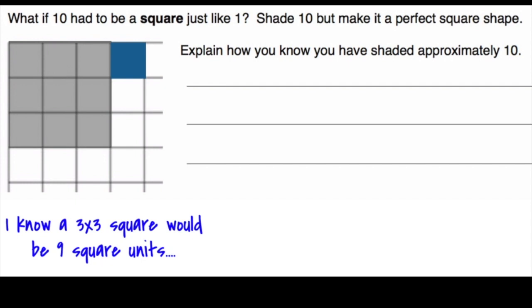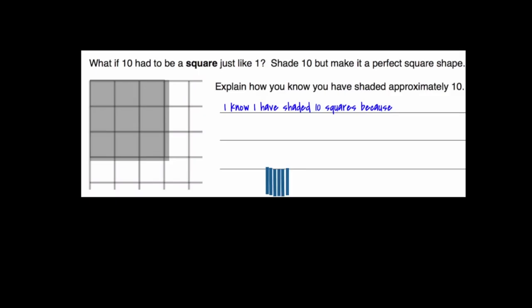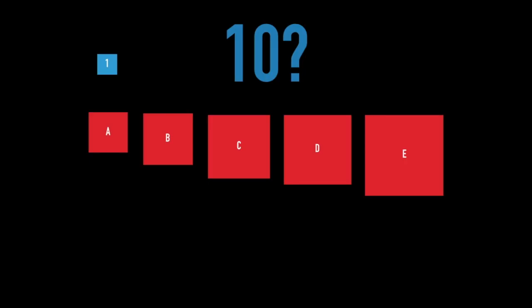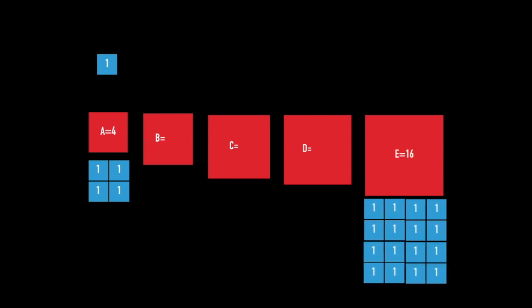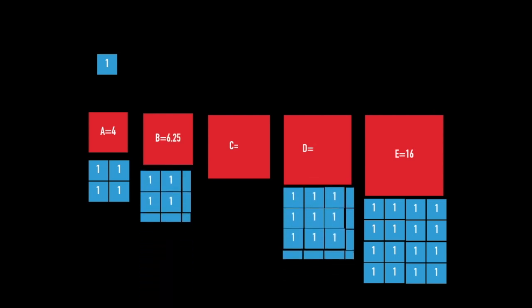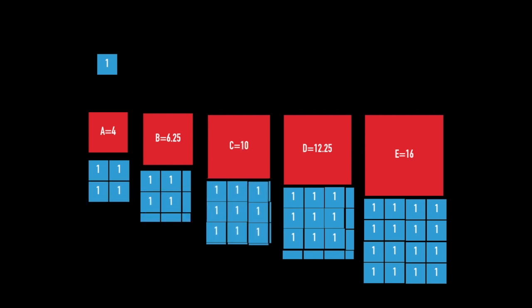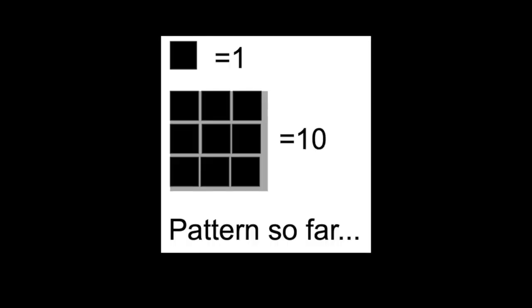We could take that last unit and break it into 6 pieces and place them around the outside. So back to the question of which square best represents 10. I can tell you it isn't A or E. Do you want to change your answer? It isn't B or D either. It was C, and you may notice that matches what you shaded.